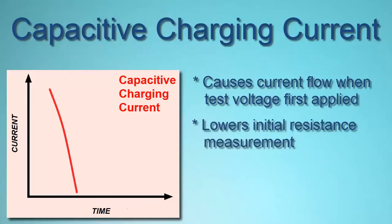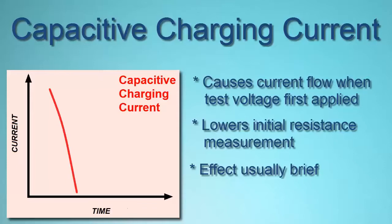This effect is usually brief, often lasting less than a second, although in very long cables or large motors this can last much longer — up to 30 minutes or more. Capacitive charging current is not an indicator of insulation quality, but it needs to be accounted for to ensure your measurement is meaningful and relevant.